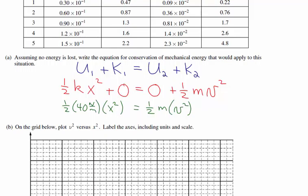This is the relationship we'll be graphing. We graph v² versus x² because the equation relates the squares of both quantities. This is a very common requirement on lab-based questions: take a known relationship, identify which quantities to graph, and linearize it to get a straight line so you can calculate the slope and use it to find an unknown quantity.